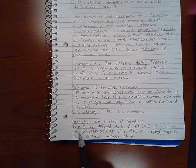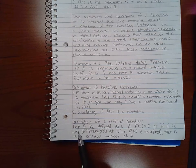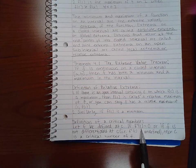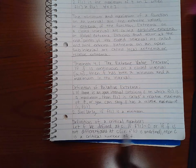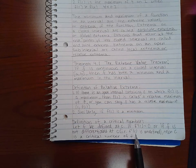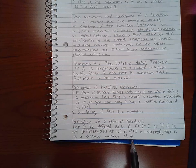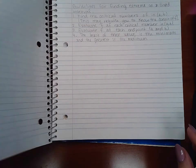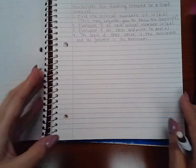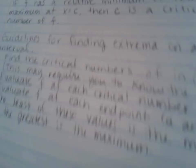Here is the definition of a critical number. Let f be defined at c. If f prime of c equals zero, or if f is not differentiable at c — meaning f prime of c is undefined — then c is a critical number of f.